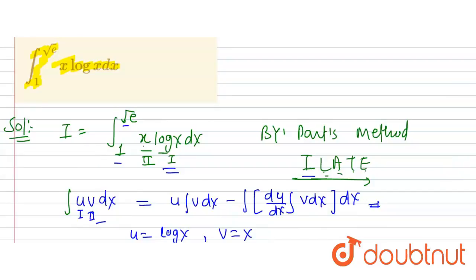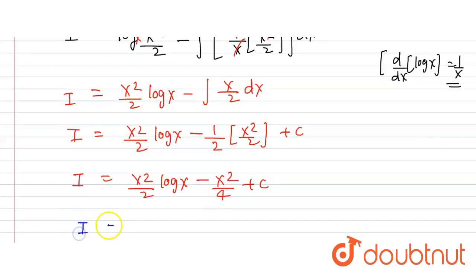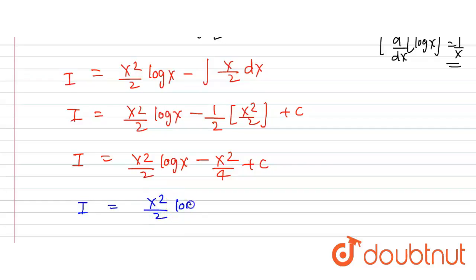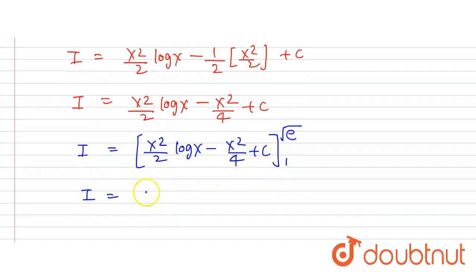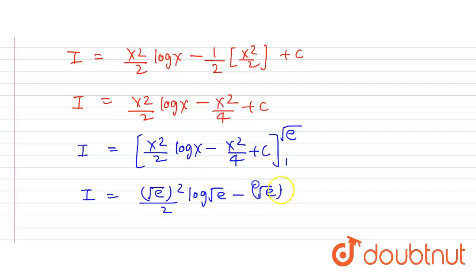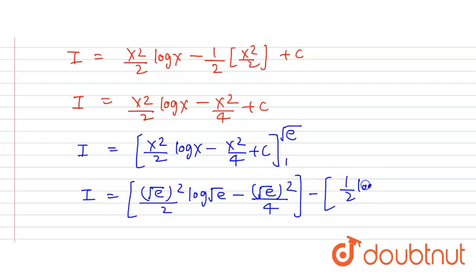Now we apply the limits from 1 to √a. Putting in the upper limit √a: (√a)²/2·log(√a) − (√a)²/4 = (a/2)·log(√a) − a/4. For the lower limit x = 1: (1/2)·log(1) − 1/4 = 0 − 1/4, since log(1) = 0.